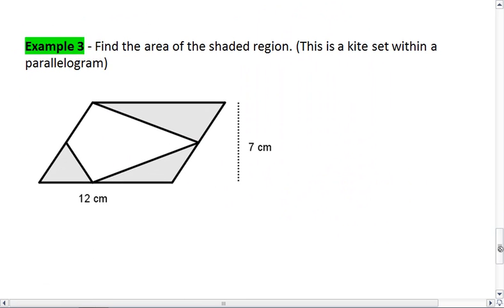And, let's look at one more example. This one's a little trickier. I really want you to try this one on your own first. I want you to find the area of just the shaded region. I'm telling you, though, this is a kite. So, your middle figure is a kite set within a parallelogram.